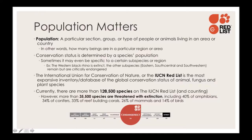Currently the IUCN has around 128,500 species and counting, with a goal of reaching around 160,000 species for the most accurate comparison of biodiversity. More than 35,500 species are threatened with extinction out of that 128,000. That includes around 40% of existing amphibians, 34% of conifers, 33% of reef-building corals, 26% of mammals, and 14% of birds.